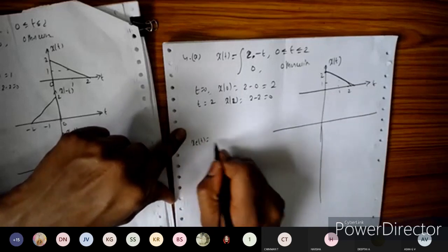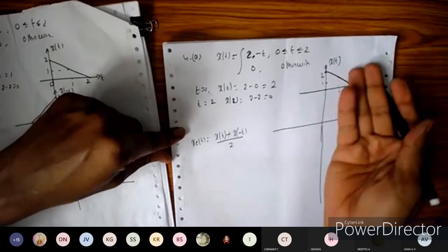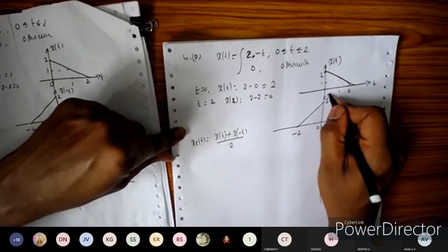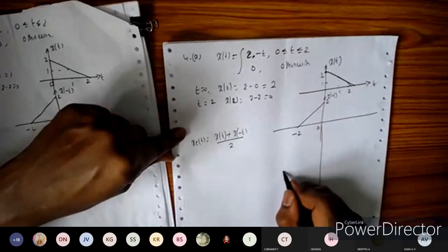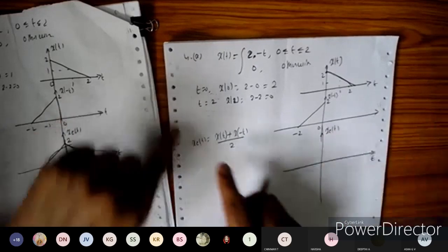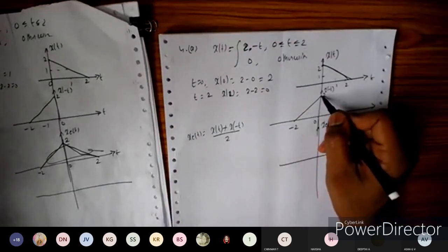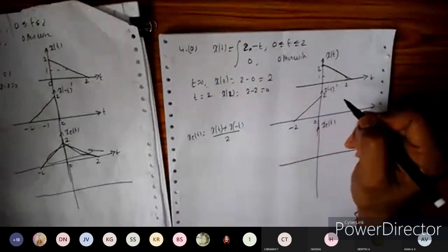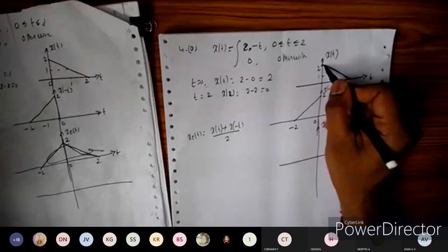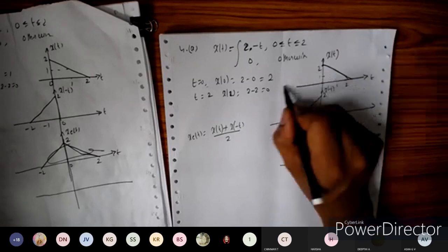To get the even and odd components, we need to find x(-t). Taking the time reflection, the waveform shifts to the interval -2 to 0, with value 2. This gives us x(-t). Now let us find the even component using the formula xe(t) = [x(t) + x(-t)] / 2. At t = 0, the value is 2, so 2/2 = 1.